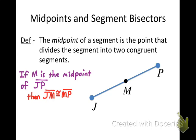One other thing I want to show you is when you have a diagram and you want to show that any two segments are congruent, what you can do is put a little dash mark on the segments that are congruent. That means that segment JM is congruent to segment MP. Alright, so that's what a midpoint is.